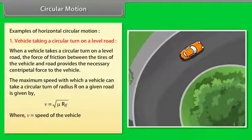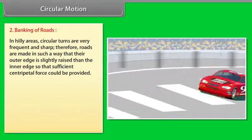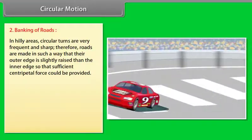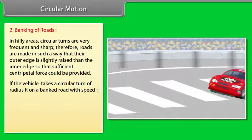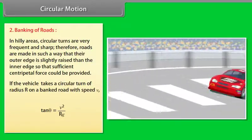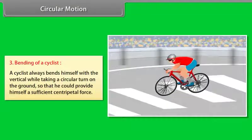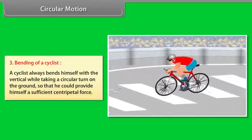Where V is the speed and μ is the coefficient of friction. Banking of Roads: In hilly areas with frequent sharp turns, roads are built with the outer edge raised above the inner edge to provide sufficient centripetal force. For a vehicle on a banked road of radius R at speed V: tan θ = V²/(Rg), where θ is the angle of banking. Bending of a Cyclist: A cyclist bends inward while taking a circular turn to provide sufficient centripetal force.